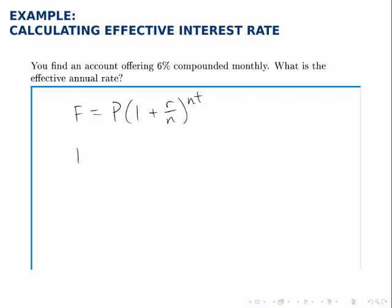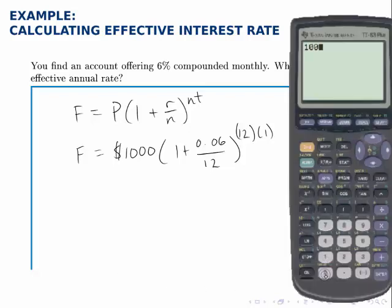So, at the end of one year, if I put $1,000 into this account, I can figure out how much this account will hold at the end of the year: 1,000 times in parentheses, 1 plus .06 divided by 12, raised to the power of 12 times 1, or just 12.